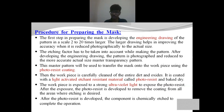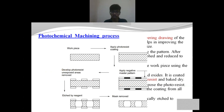The difference between chemical machining and photochemical machining lies in the method used for removing the unwanted masking portions. In chemical machining, we use manual or robotic methods. In photochemical machining, we use ultraviolet light to remove the unwanted masking materials.